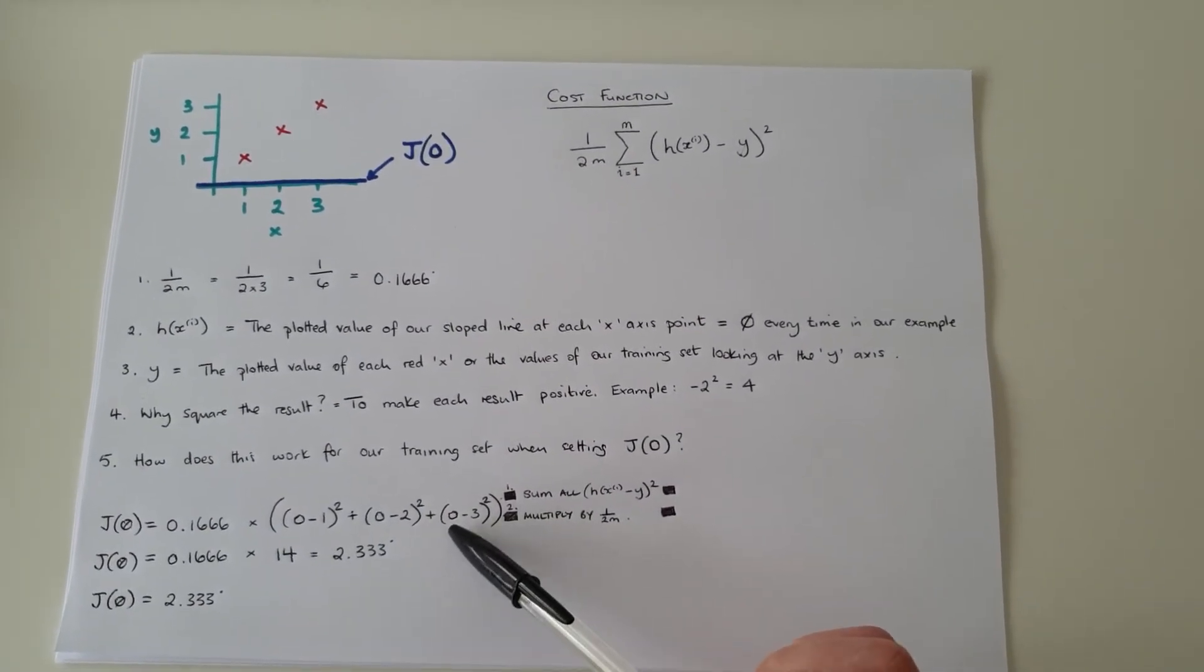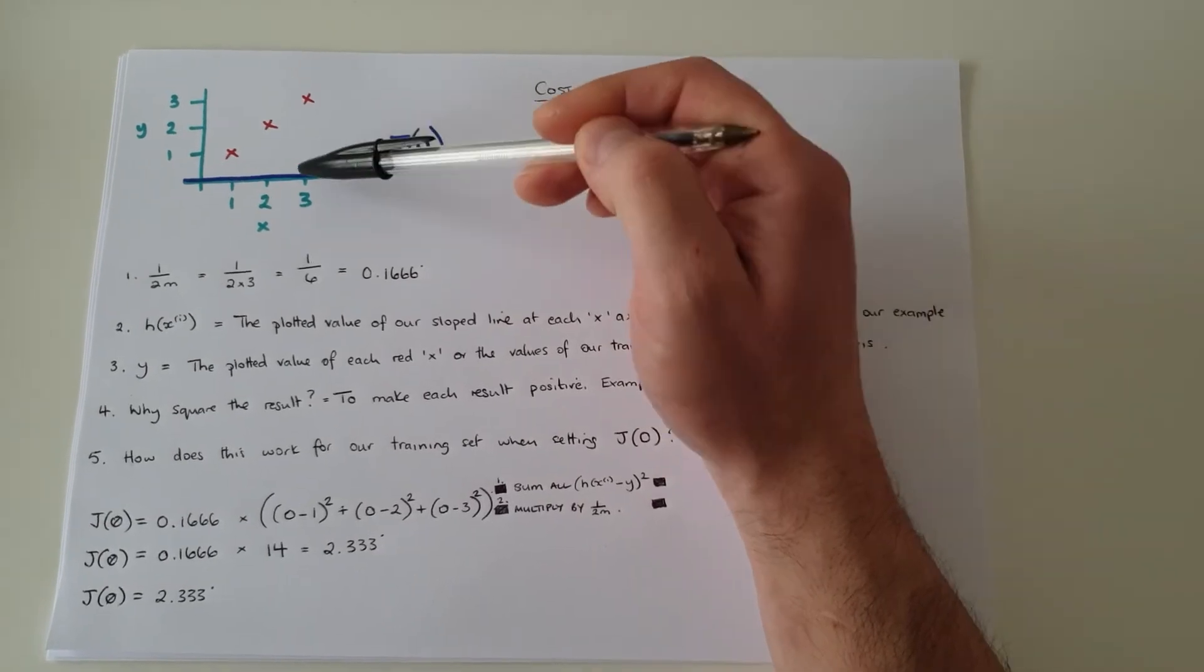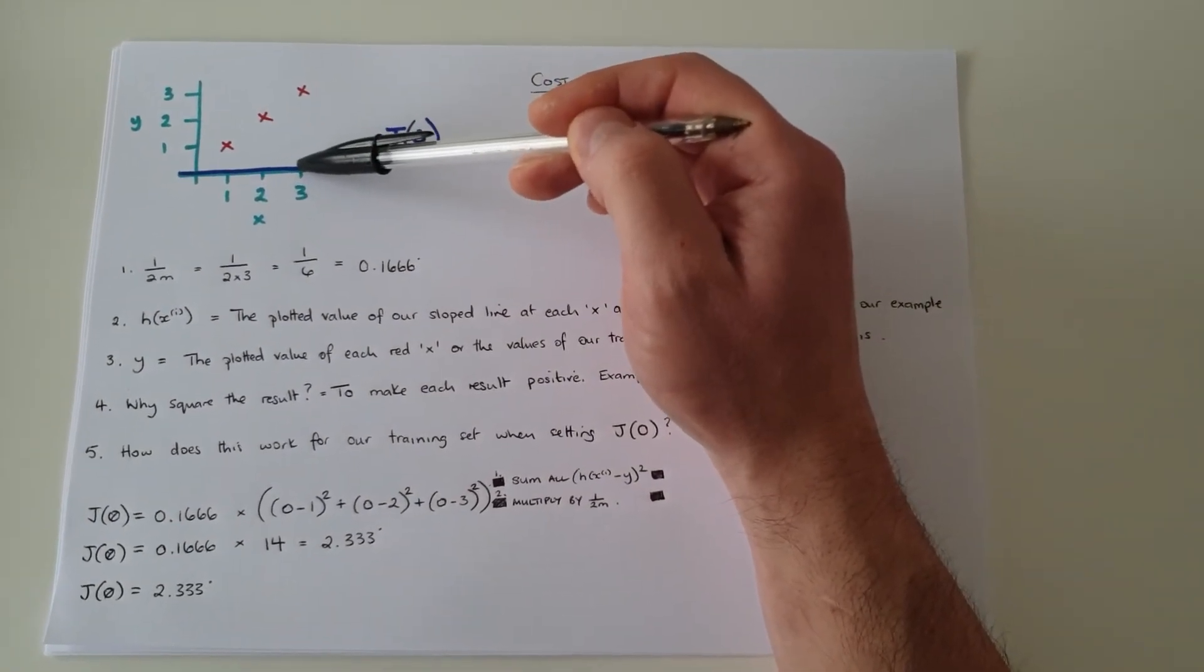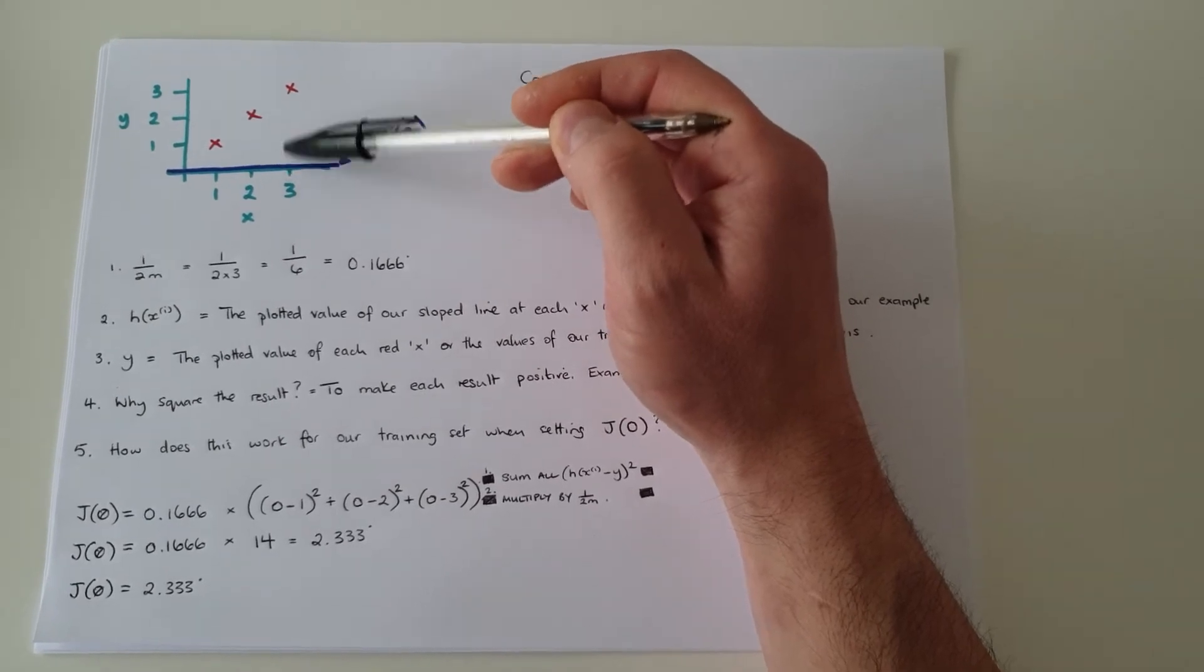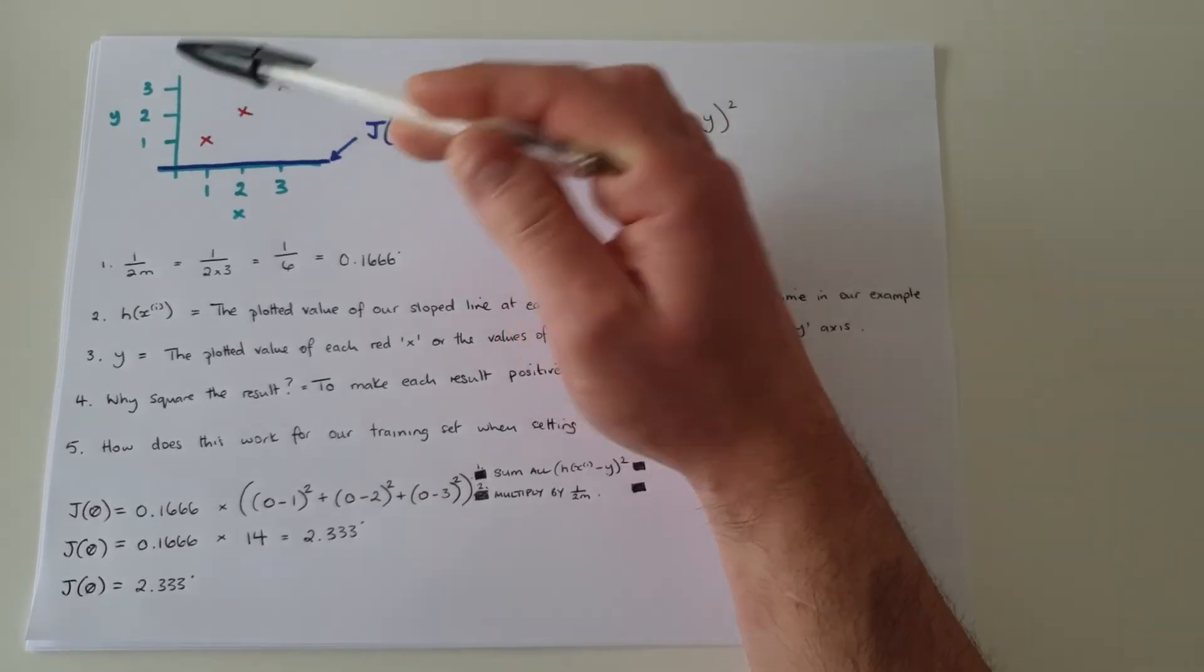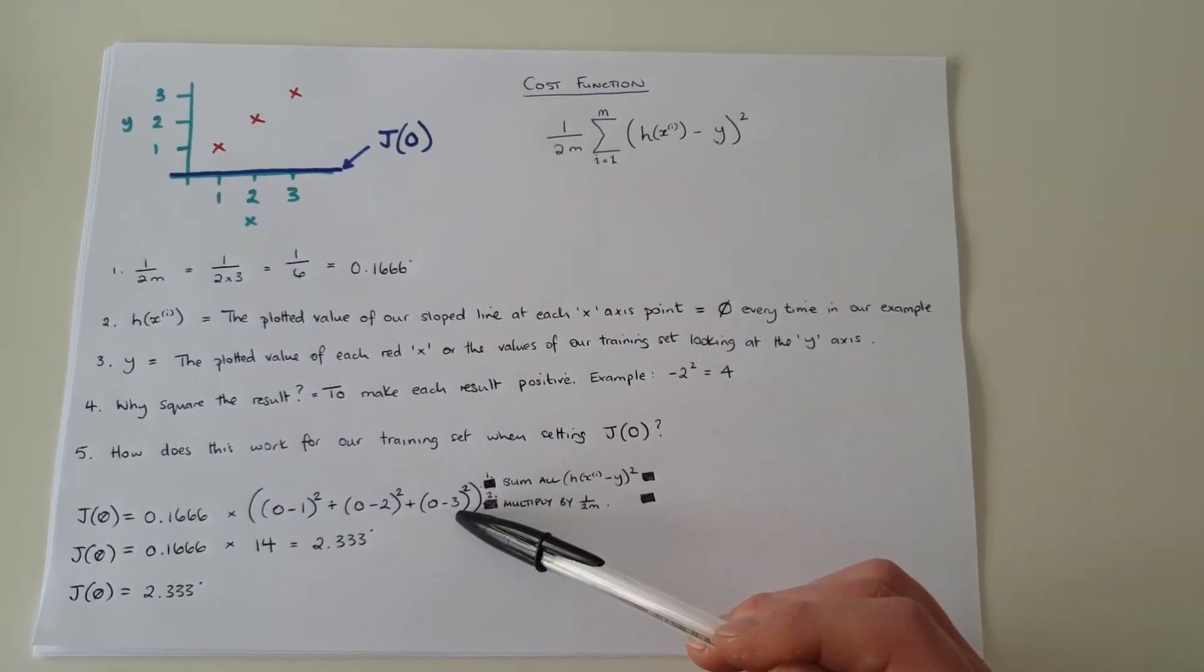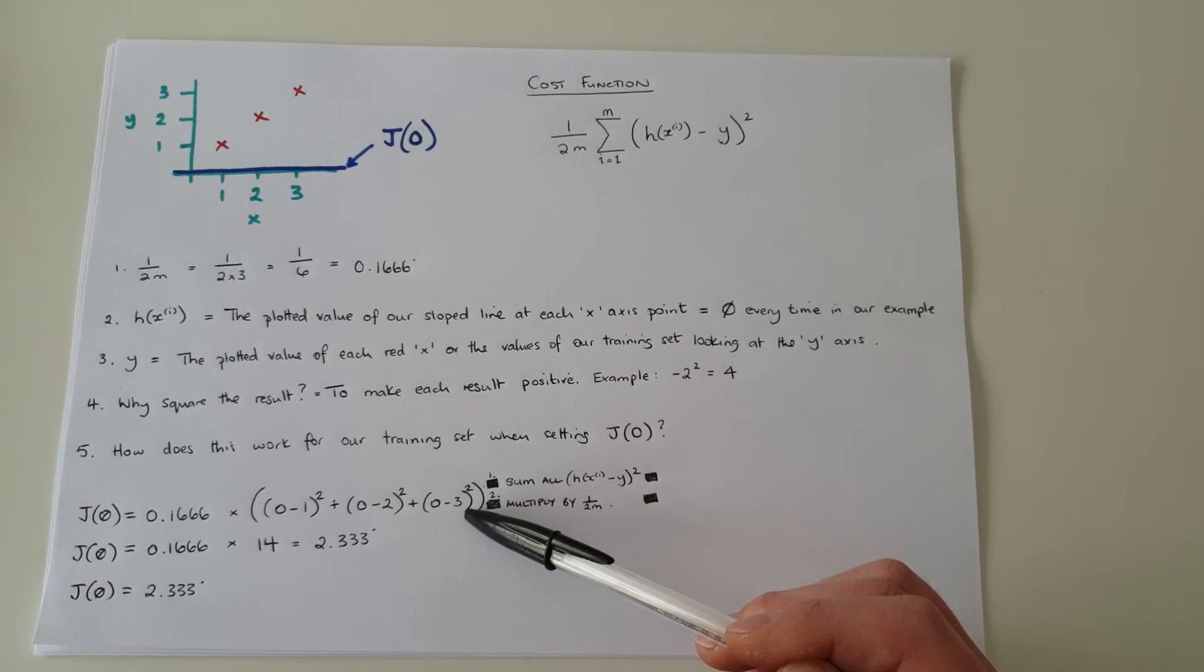And on the third iteration, again, our j zero at point three is at zero again, because it's a flat line. If we go up, our y value is three. So it's zero minus three equals negative three. And if we square that, it'll give us positive nine.